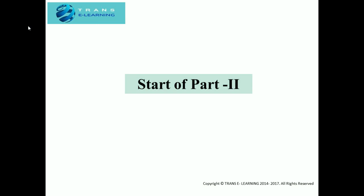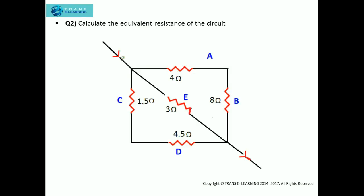Part 2 starts from here. The next question: calculate the equivalent resistance of the circuit. Here you can see the current I is leaving the circuit from one point and entering from another. So first of all I will consider that the current I is entering the circuit, and at this point you can see that the current will get divided — this point where the current divides is known as a junction.